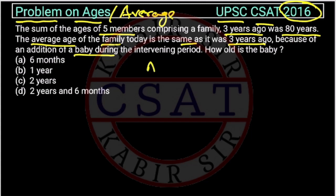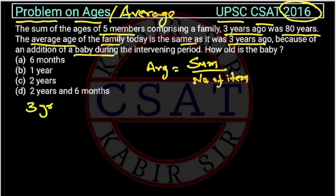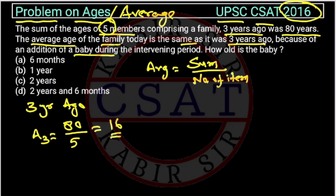The formula of average is: average equals sum of observations upon number of observations. So, 3 years ago, the sum is 80 and the number of items is 5. Therefore, the average 3 years ago is 80 divided by 5, which is 16.